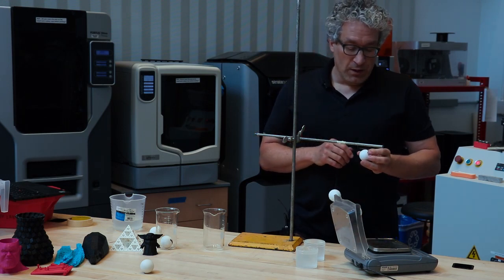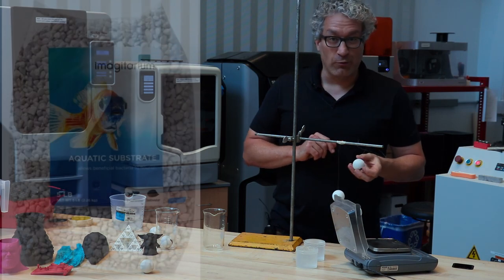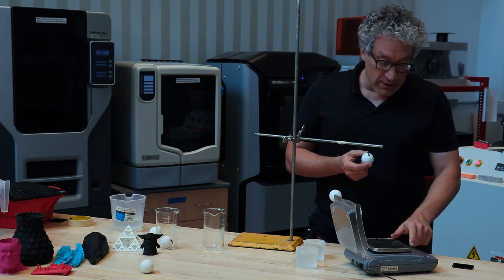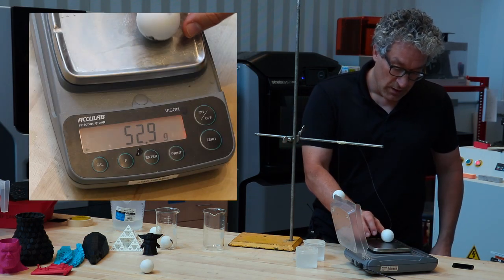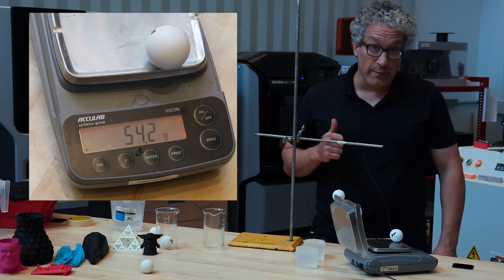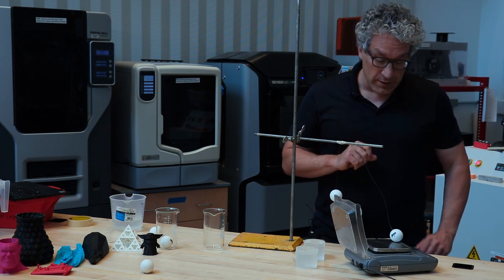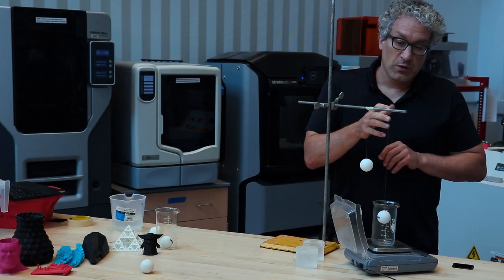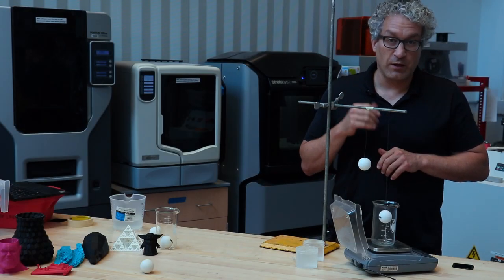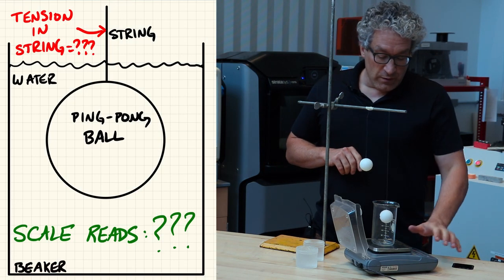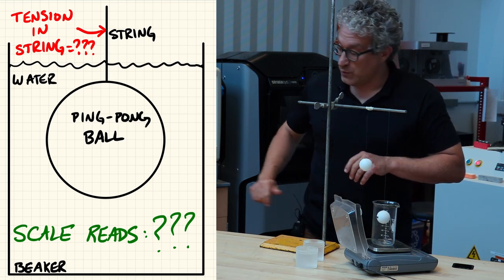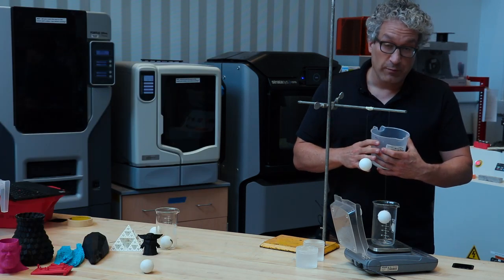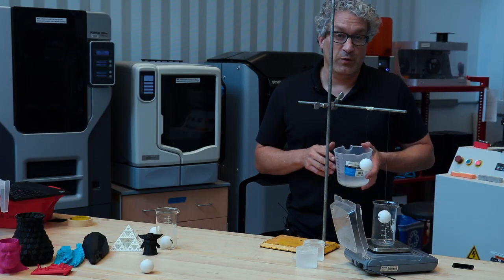Now let's look at a different case using this ping pong ball. Rather than being filled with air, this ping pong ball has been filled with fish tank gravel, which is denser than water. First, let's see how much it weighs — it reads about 54 grams, or about 0.54 Newtons. Now we're going to take this ball, suspend it on a string, zero the scale, and pour 350 grams of water into the system. What is the reading the scale is going to have? Think about that while I play a video of me playing frisbee with my dog in the snow.